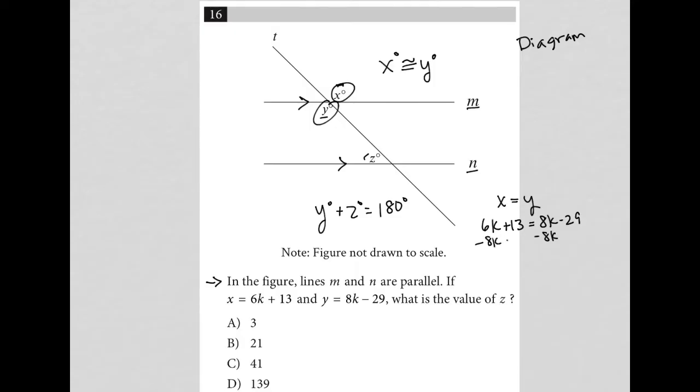I'm going to subtract 8k from both sides and subtract 13 from both sides. 6k minus 8k is negative 2k. Negative 29 minus 13 is negative 42. Divide by negative 2 on both sides, and I end up with k equals positive 21. So that's my k value.